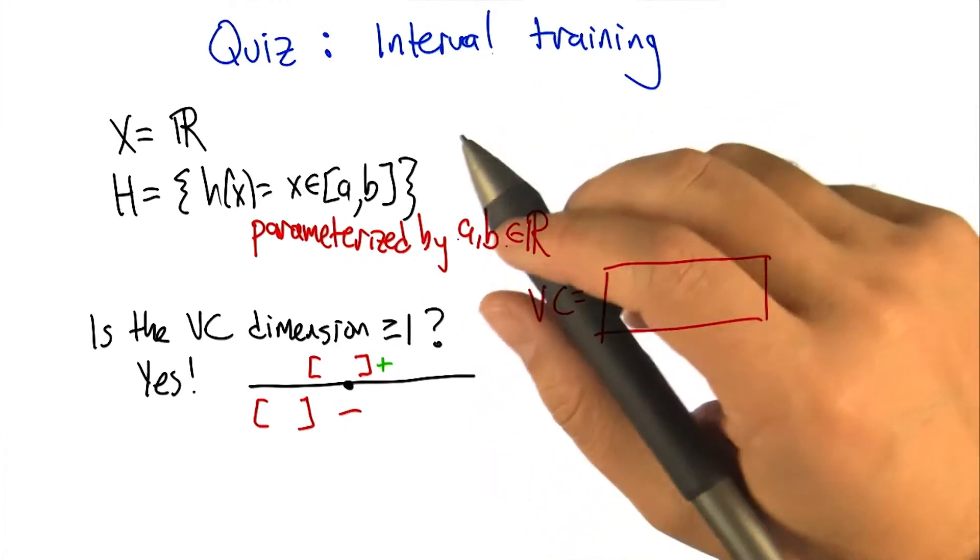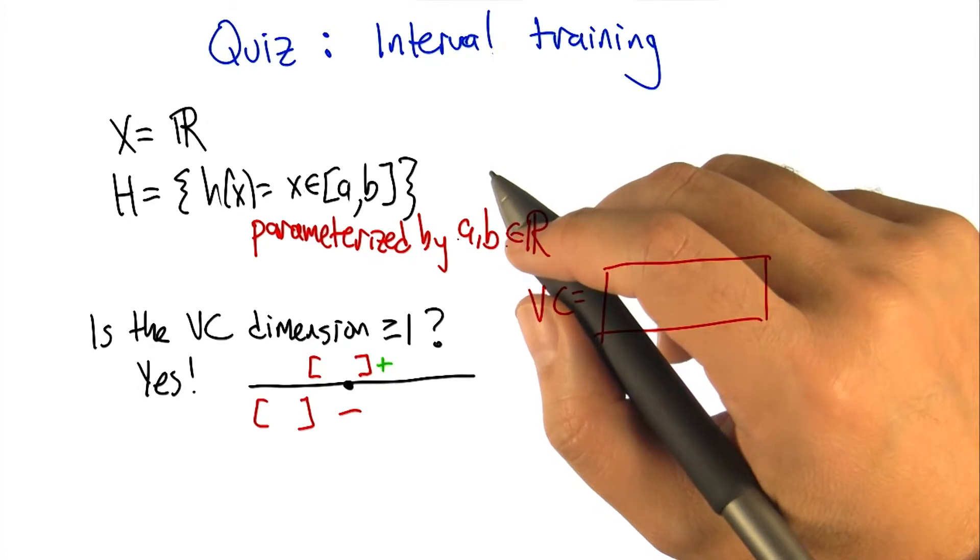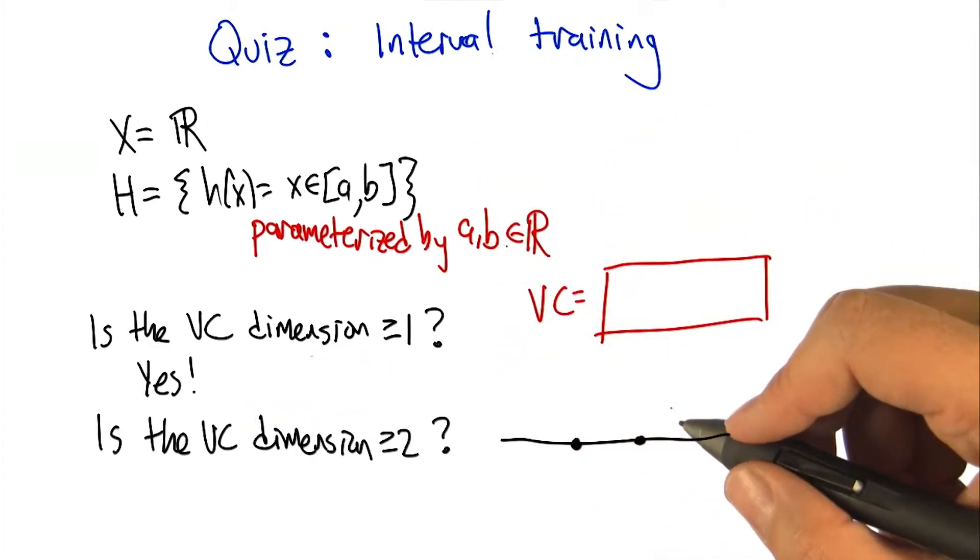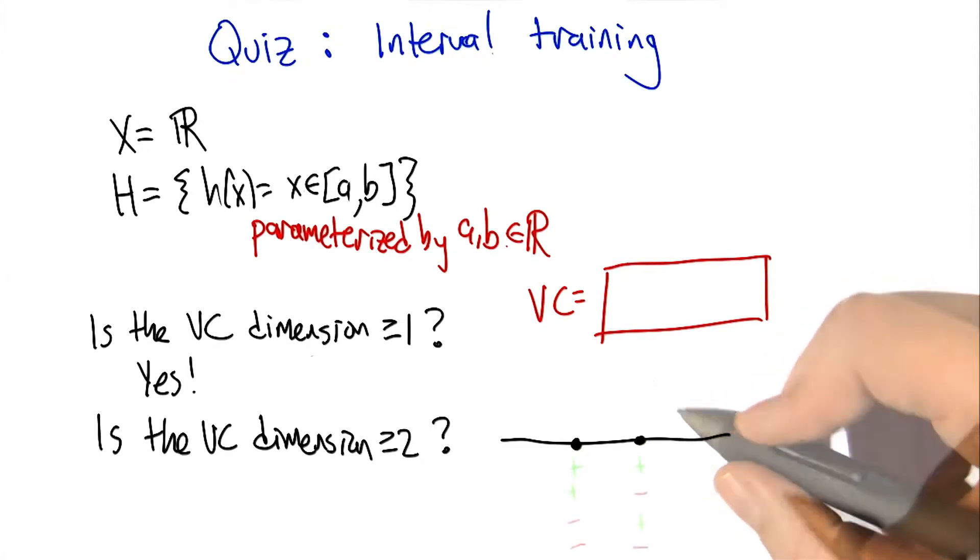Okay, so then we could see if the VC dimension is greater than or equal to two. So if I put two points on a line, there are only four possibilities. I've got to get plus plus, plus minus, minus plus, and minus minus.